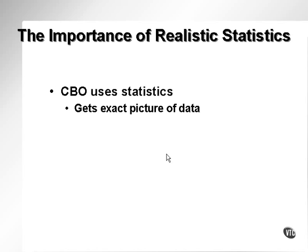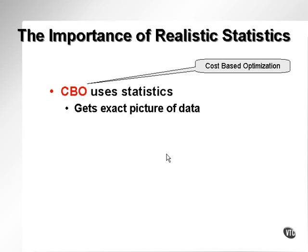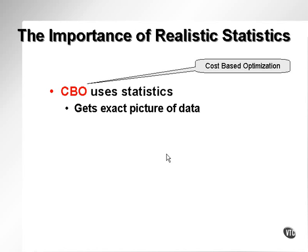As we've already seen, the CBO — cost-based optimization — uses statistics. I refer to cost-based optimization as the CBO or CBO method of optimization. The CBO gets an exact picture of data.